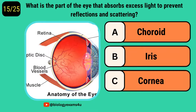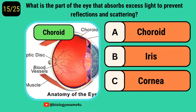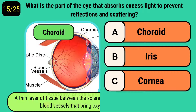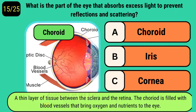What is the part of the eye that absorbs excess light to prevent reflections and scattering? It is called the choroid, a thin layer of tissue between the sclera and the retina. It is filled with blood vessels that bring oxygen and nutrients to the eye.